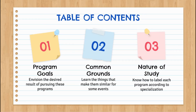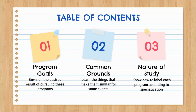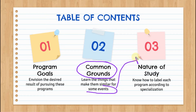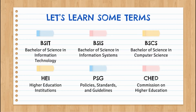The content of this video revolves around three areas. Number one: program goals, which envision the desired result of pursuing these programs. Number two: common grounds — here you will learn the things that make them similar in some aspects. Number three: the nature of study — here we will learn how to label each program according to specialization. I'm also sharing key terms because you will encounter them in the succeeding presentation.